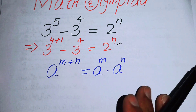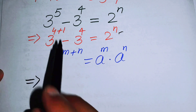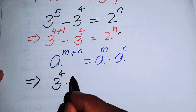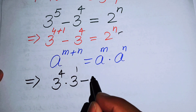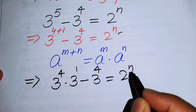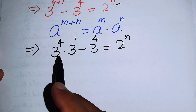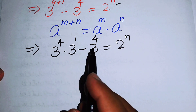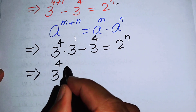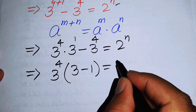We apply this exponential law to break the exponent and get 3 to the power of 4 times 3 to the power of 1, minus 3 to the power of 4, equals 2 to the power of n. Now focusing on the left hand side, we take out 3 to the power of 4 as a common factor, giving us 3 to the power of 4 times (3 minus 1) equals 2 to the power of n.